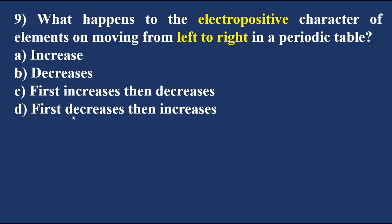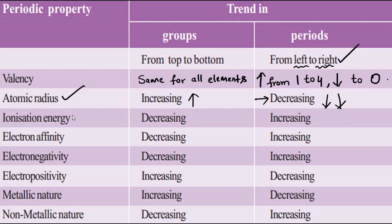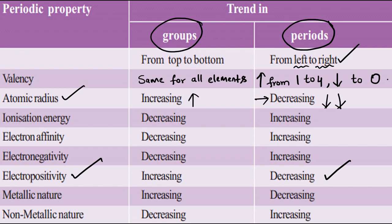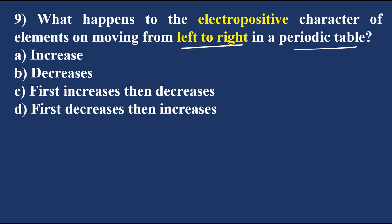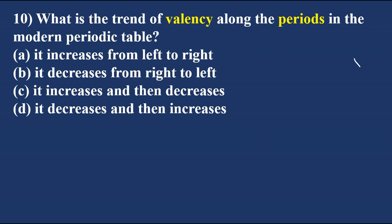What happens to electropositivity going from left to right in the periodic table? In periods, going left to right, electropositivity decreases. Going top to bottom in a group, electropositivity increases. So in periods, electropositivity decreases - option B is the right answer.